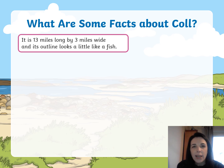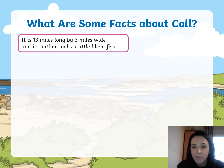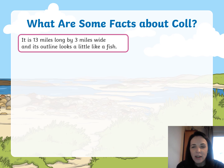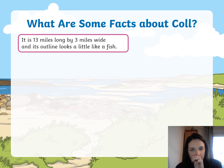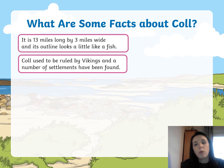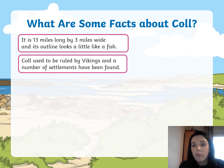Here are some facts about Coll. It is 13 miles long by 3 miles wide, and its outline looks like a little fish. To drive from one end to the other would only take about 20 to 25 minutes. Coll used to be ruled by Vikings and a number of settlements have been found, showing it is a very old island where people have been living for a long time. Maybe that explains why they've got castles on the island.